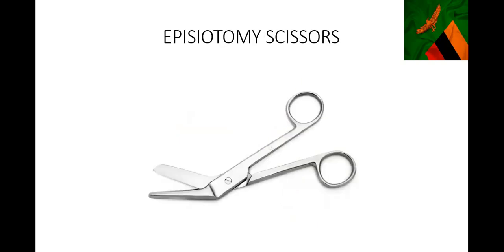This is an episiotomy scissors. It's something you should know. I'm putting it here because many times on the labor ward we are improvising - we don't have the correct instrument, and some people are using blades to do episiotomies. So this is the correct instrument. You know it has this funny shape to be able to go through the vagina and cut the outside at the same time - that's why it's shaped like that.